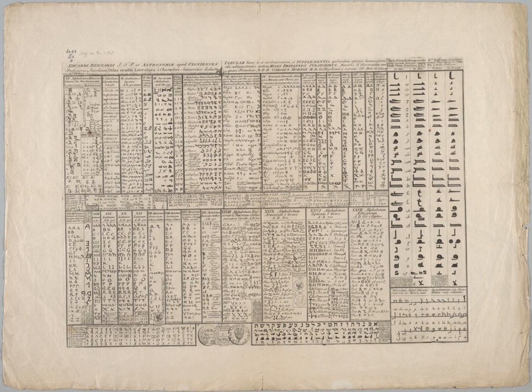The Proto-Sinaitic script eventually developed into the Phoenician alphabet, which is conventionally called Proto-Canaanite before ca. 1050 BC. The oldest text in Phoenician script is an inscription on the sarcophagus of King Ahiram. This script is the parent script of all Western alphabets. By the 10th century, two other forms can be distinguished, namely Canaanite and Aramaic. The Aramaic gave rise to the Hebrew script. The South Arabian alphabet, a sister script to the Phoenician alphabet, is the script from which the Ge'ez alphabet is descended.